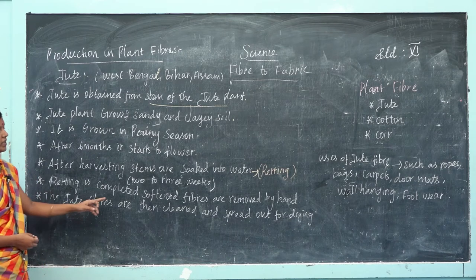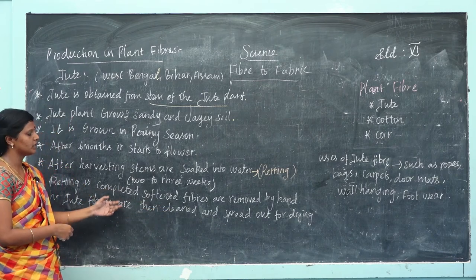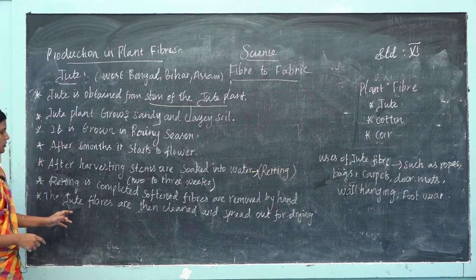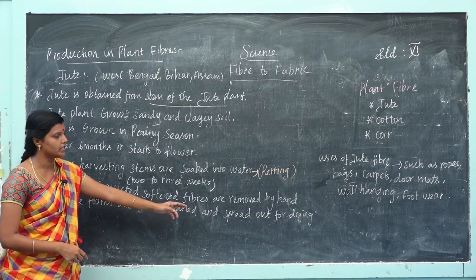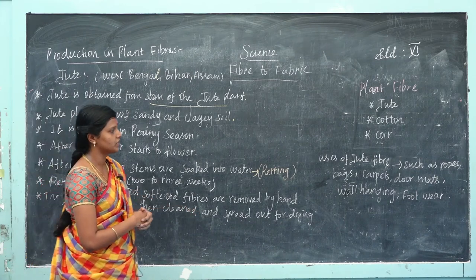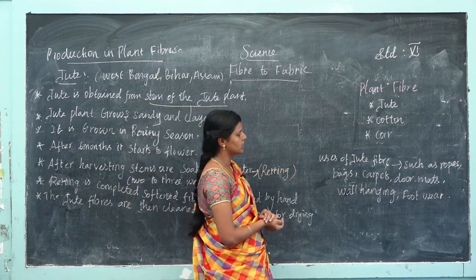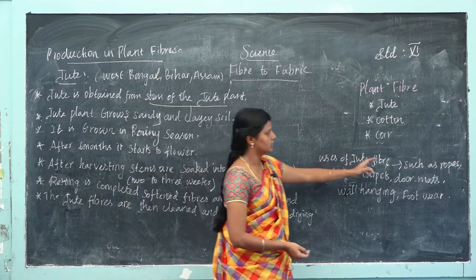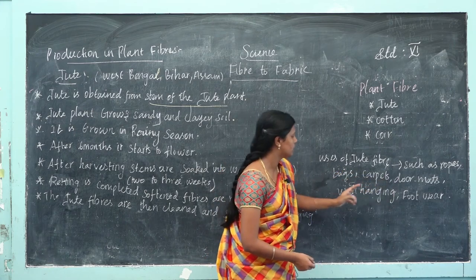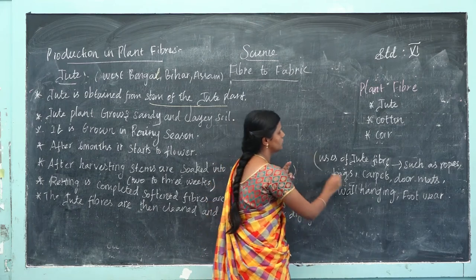The jute fibers are then cleaned and spread out for drying. Next, we see about the uses of jute fiber. Jute fibers are used to make ropes, bags, carpets, doormats, wall hangings, and floor coverings. These are the uses of jute fibers.